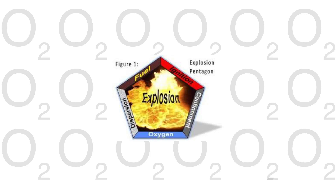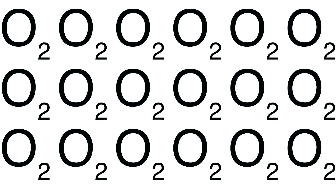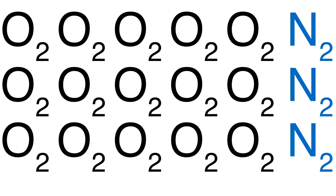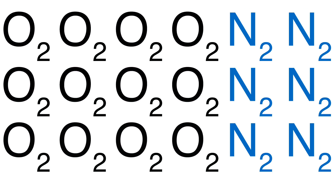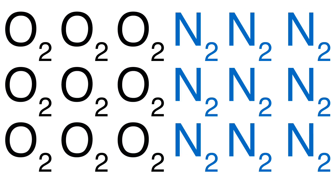The limiting oxygen concentration or LOC tells you how much of an inert atmosphere is needed to prevent an explosion from occurring. Oxygen is an element in the explosion pentagon that can be controlled by adding nitrogen into the atmosphere of the operation. The nitrogen reduces the amount of oxygen to mitigate risks of an explosion event.